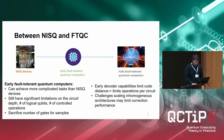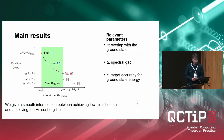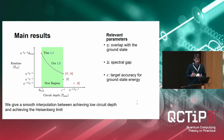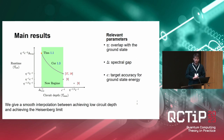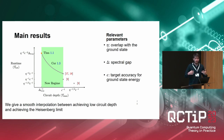One thing you can do in this framework is sacrifice the overall running time by decreasing the circuit depth — decreasing the number of gates you implement, but increasing the number of samples you take. There are three relevant parameters: the overlap with the ground state, the spectral gap, and the accuracy with which you want to estimate the ground state energy.